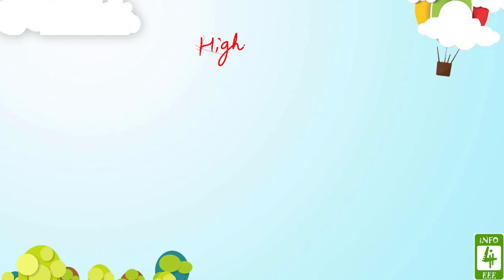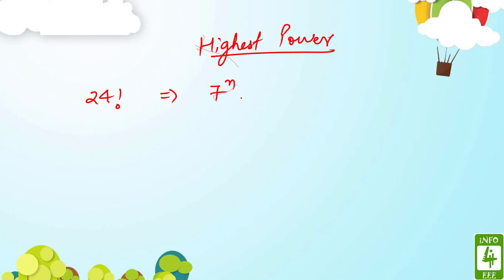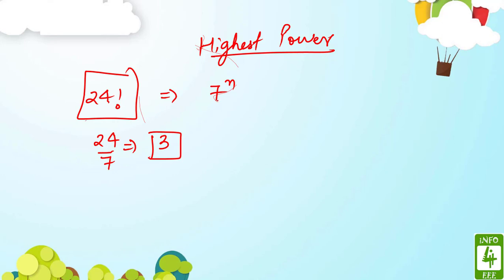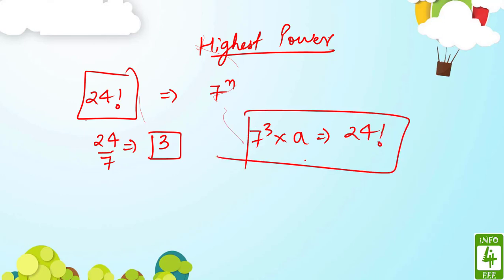On the same note, finding the highest power works the same way. Suppose we have 24! and someone asks for the highest power of 7. Divide 24 by 7 → 3 times. Since 3 is not divisible by 7, stop. Total = 3. So 7³ is the highest power of 7 in 24!, meaning 7³ × some integer A = 24!.